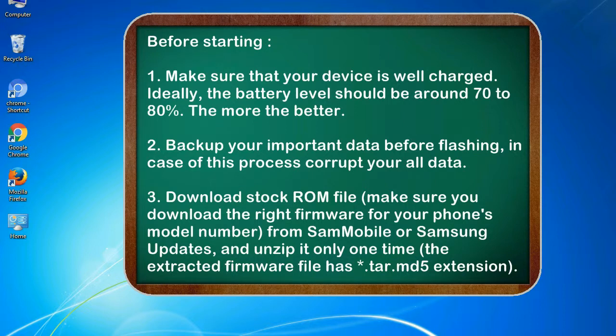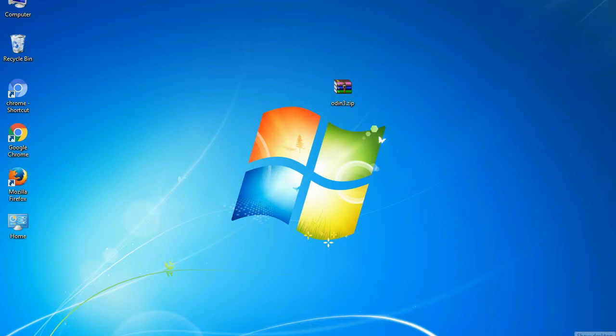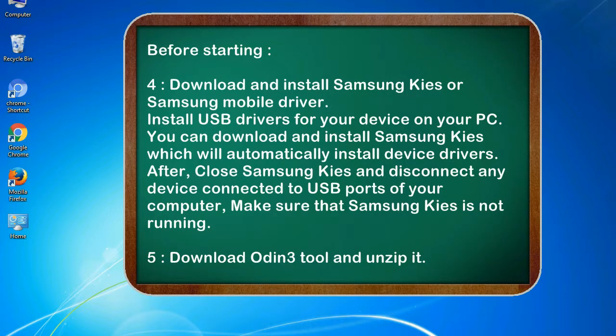3. Download the stock ROM file. Make sure you download the right firmware for your phone's model number from Sammobile or Samsung Updates, and unzip it only one time. The extracted firmware file has a *.tar.md5 extension. 4. Download and install Samsung Kies or Samsung mobile driver to install USB drivers for your device on your PC. After installation, close Samsung Kies and disconnect any device connected to USB ports of your computer — make sure that Samsung Kies is not running.